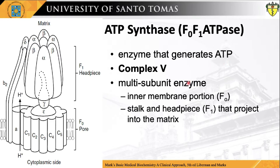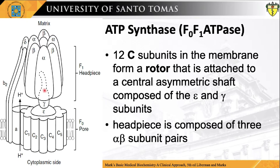ATP synthase is a multi-subunit enzyme containing an inner membrane portion known as the FO, and a stalk and headpiece portion, the F1, that projects into the matrix. The ATP synthase has 12 C subunits in the membrane that form a rotor attached to a central asymmetric shaft composed of epsilon and gamma subunits. The headpiece is composed of three alpha-beta subunit pairs.